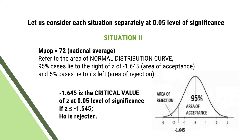Consider situation 2: if the population mean is less than 72 — less than the national average. Refer to the normal distribution curve: 95% of cases lie to the right of Z equals minus 1.645 — this is the area of acceptance. And 5% of cases lie to its left — that is the area of rejection. Minus 1.645 is the critical value of Z at 0.05 level of significance. If Z is less than or equal to minus 1.645, the null hypothesis is rejected.